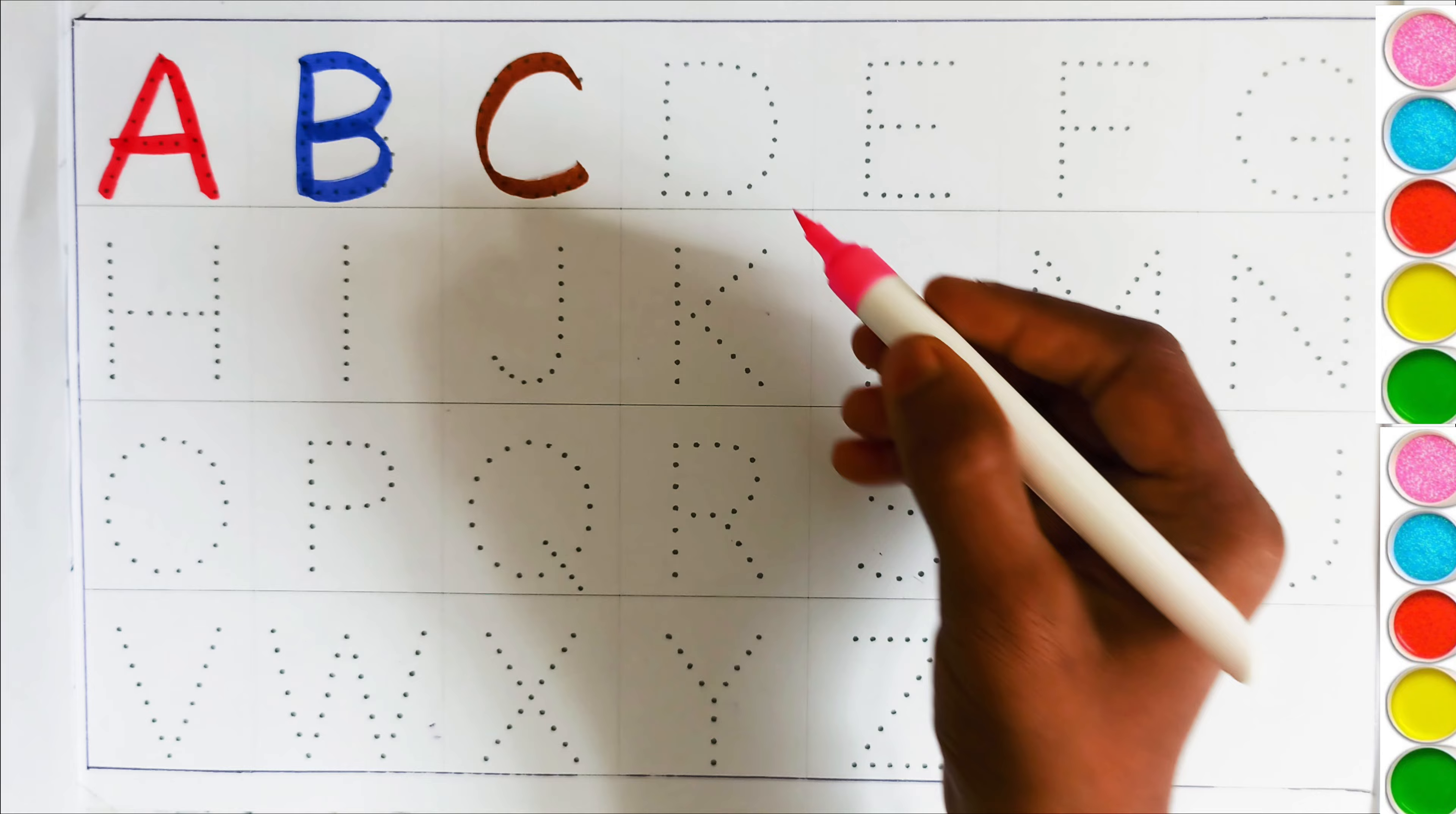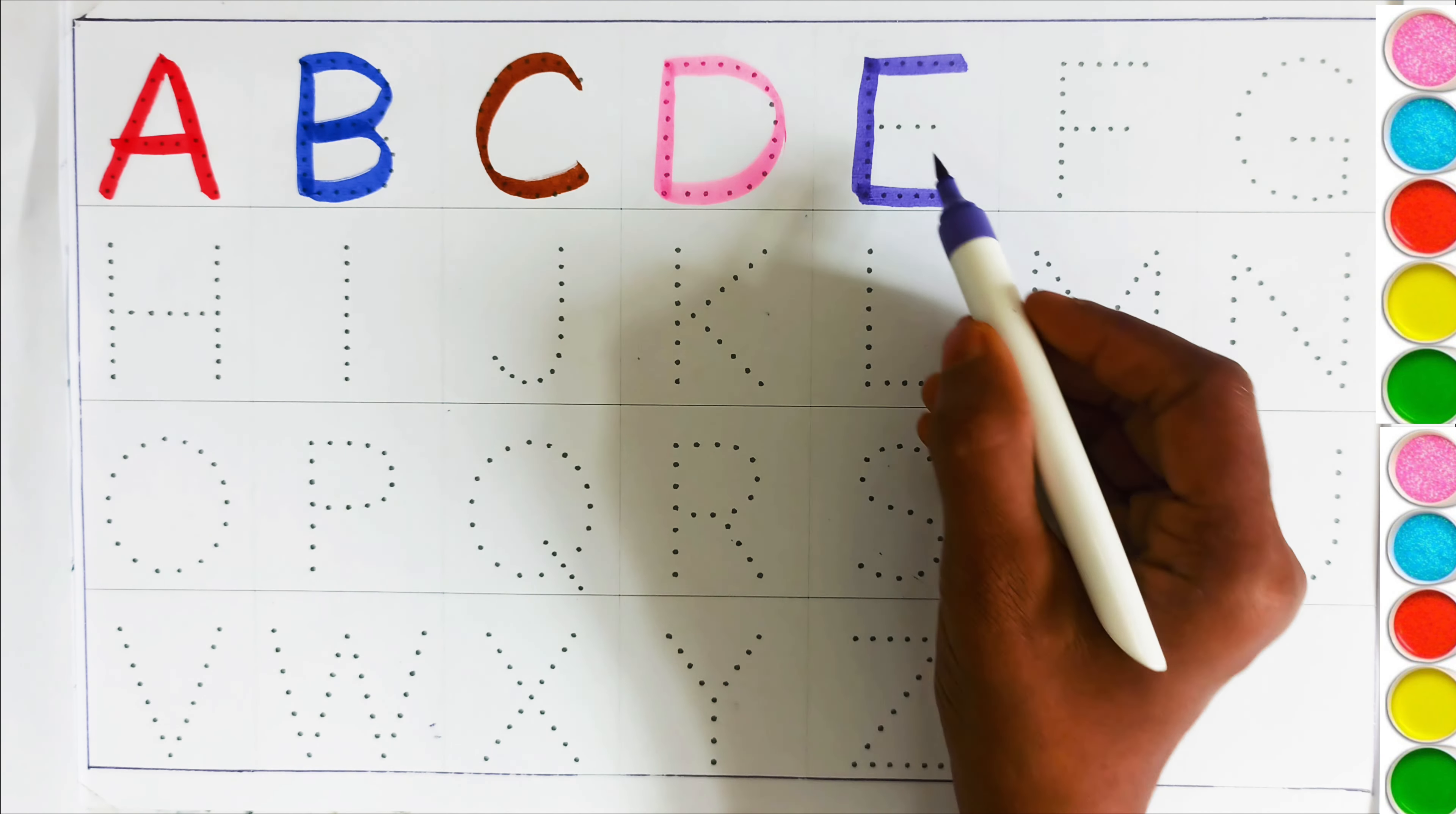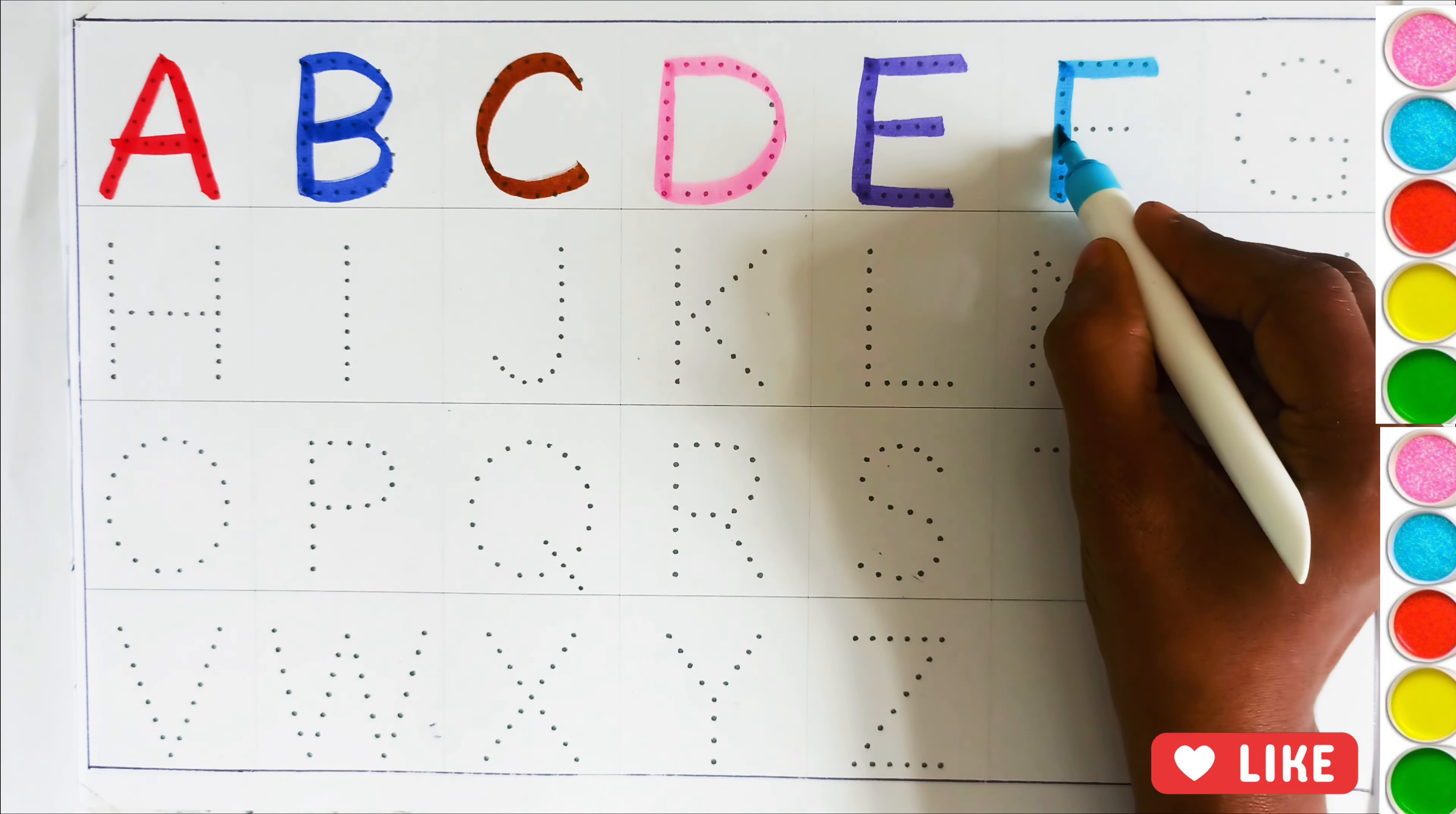This is pink color. D, D for dog. This is purple color. E, E for elephant. This is sky blue color. F, F for fish.